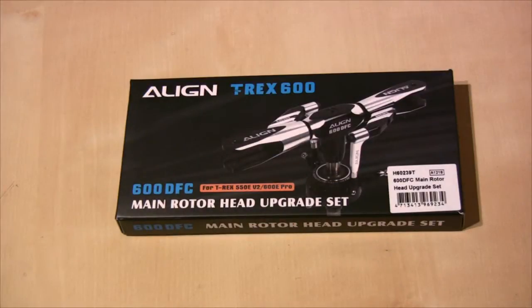This is the 600 DFC main rotor head upgrade set, the newly announced rotor head for the Align 600 EFL or Align 550 E. It changes the rotor head by using a shorter main shaft which brings the rotor head down closer to the body of the helicopter.